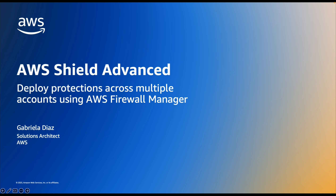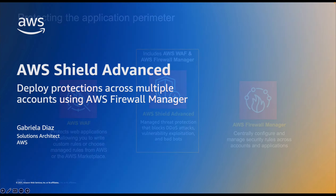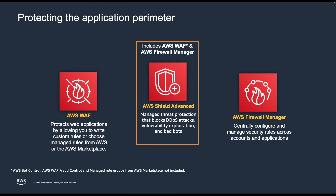Let's first review some important concepts. Our perimeter protection portfolio includes three services. AWS WAF is a web application firewall that protects your HTTP applications against Layer 7 attacks. You can use AWS Managed Rules that are updated periodically and maintained by our threat research team, leverage partner rules, or build your own custom rules.